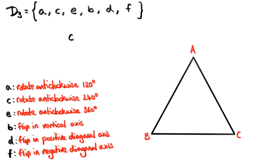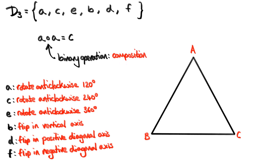Let's write it down. C, which stands for rotation anticlockwise by 240 degrees, is equal to the transformation A followed by — we draw a hollow dot to represent 'followed by' — A again. We have two elements combining to form an element on the right-hand side, which is exactly what we want from a binary operation. We've just discovered the binary operation this group is going to use: it's called composition. Performing one transformation and then the next, where the first transformation I apply is the one on the right-hand side of the dot, and the second is the one on the left-hand side.